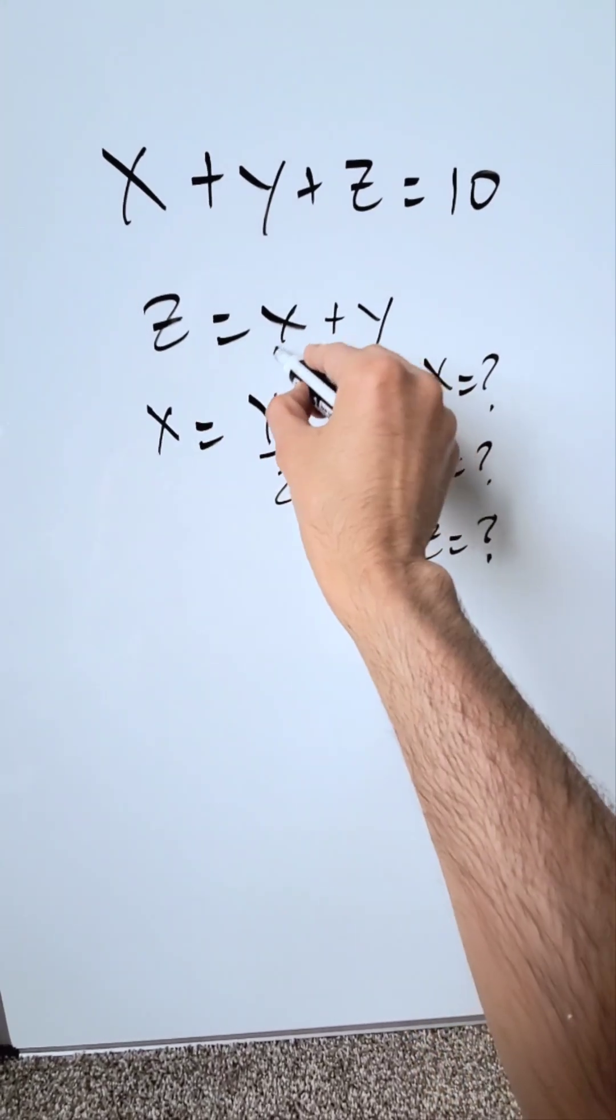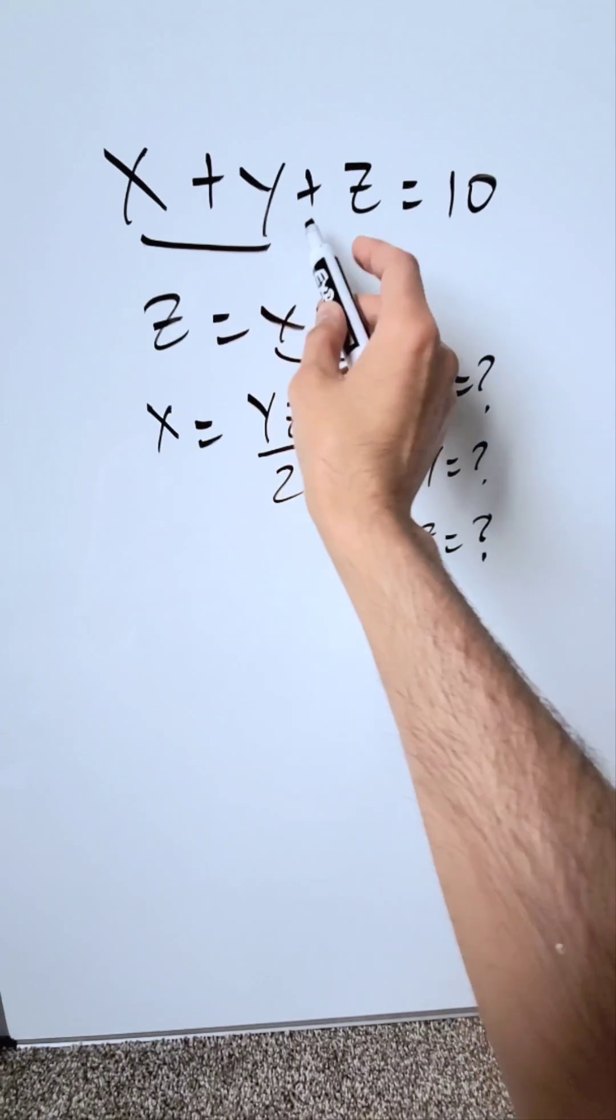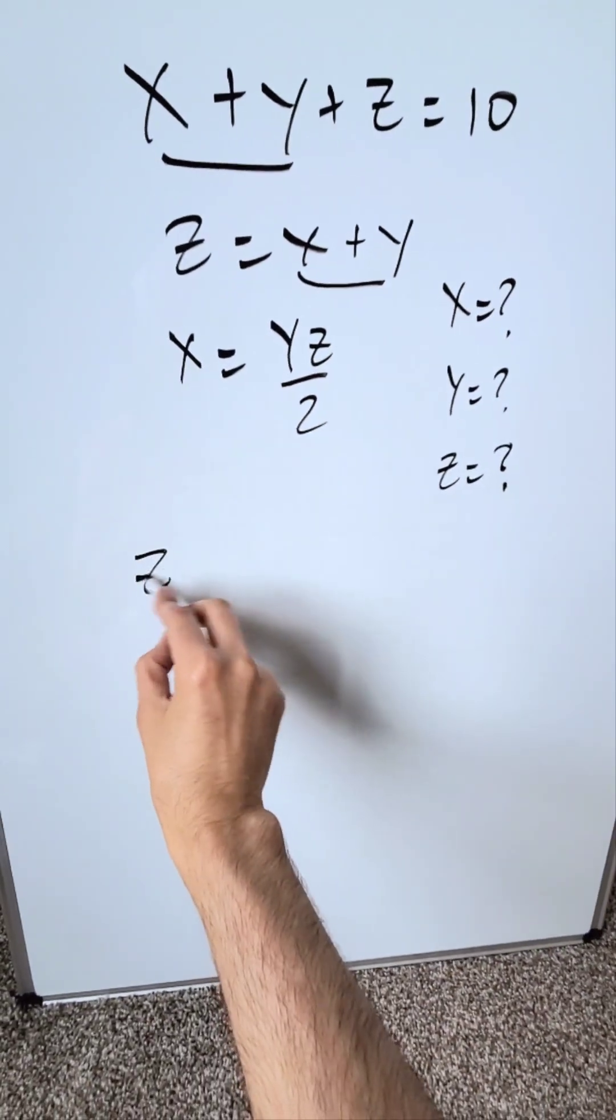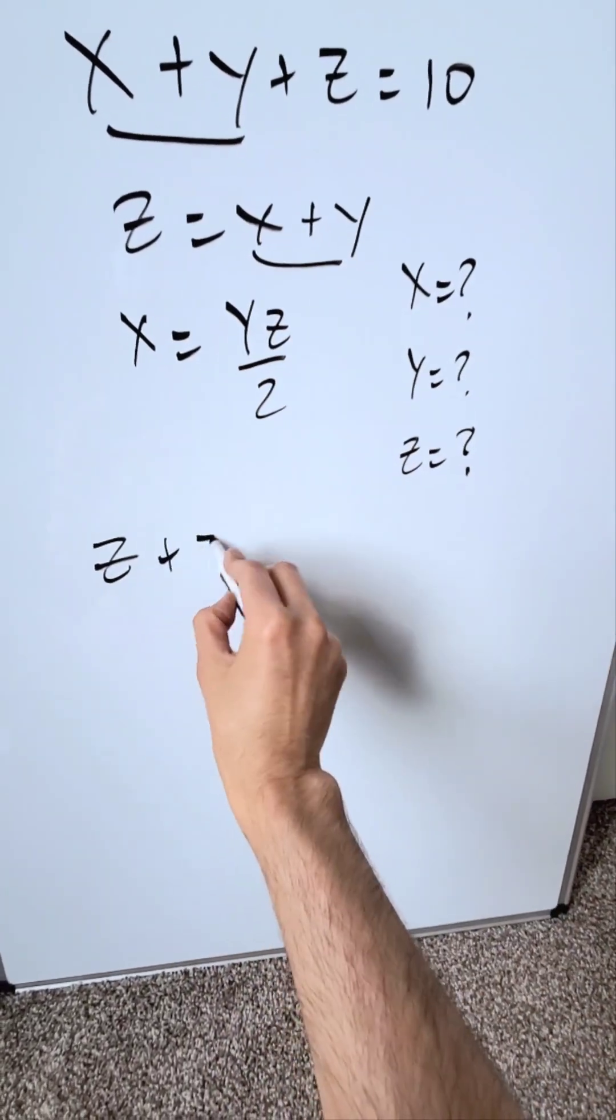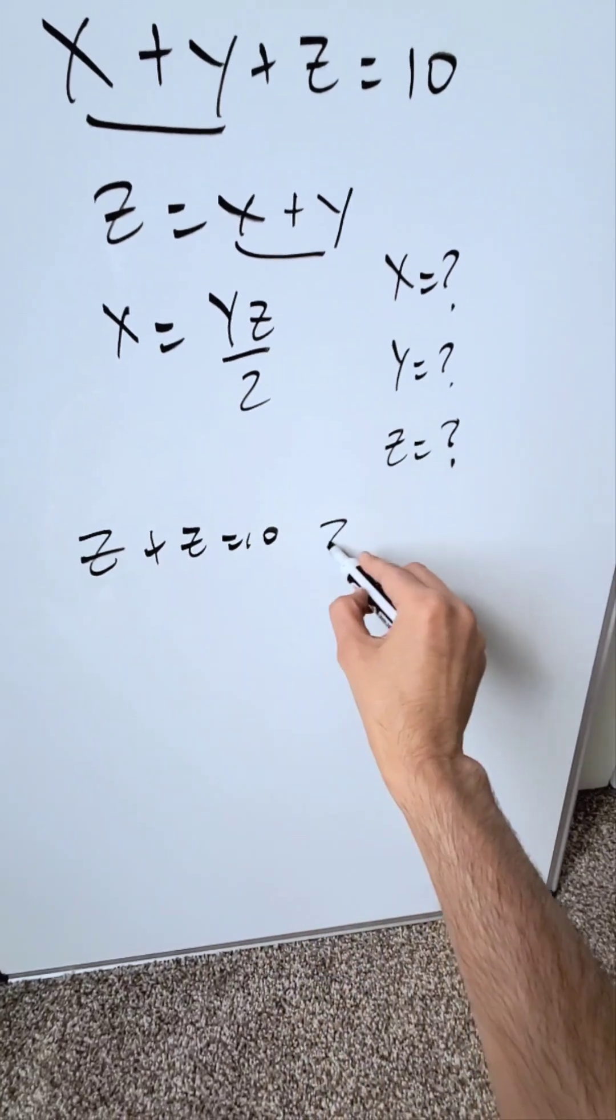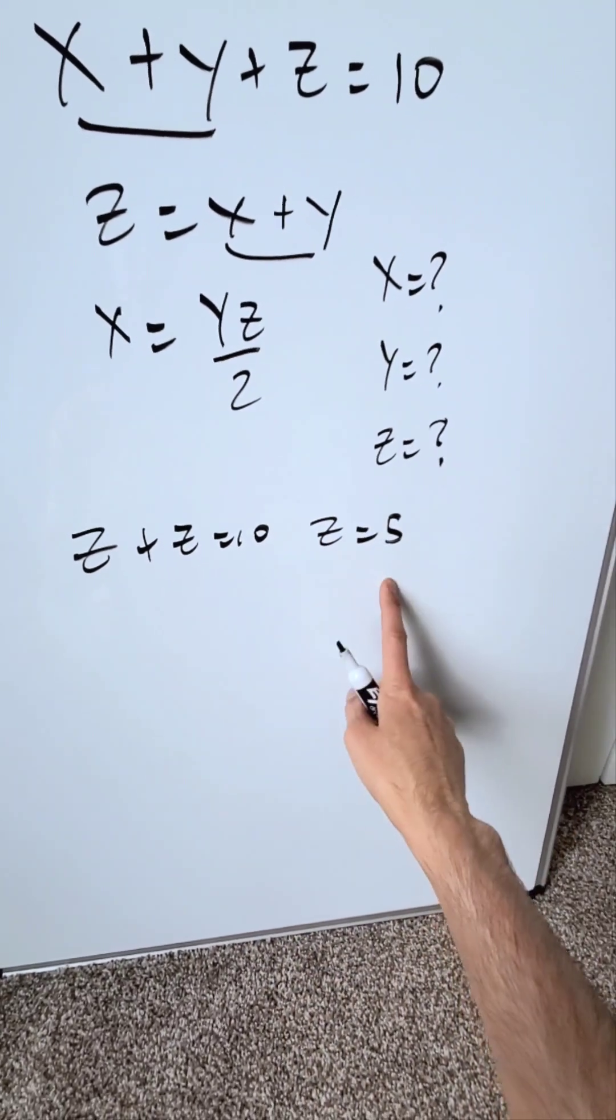Let's look at it. z is equal to x plus y. I can bring that right over here and focus on the first equation. I know z, which is x plus y, plus z is equal to 10, so 2z is equal to 10, and z is equal to 5. We have that solved.